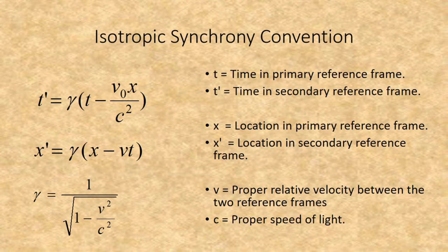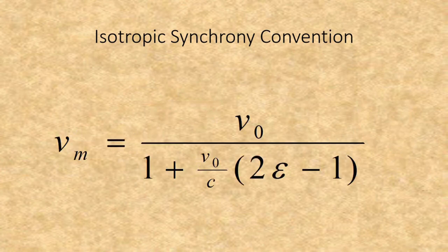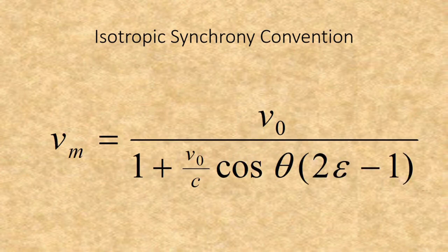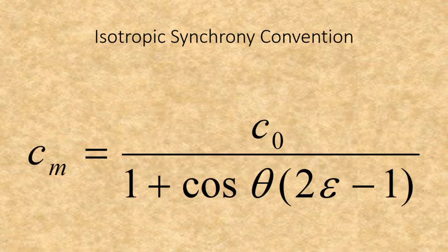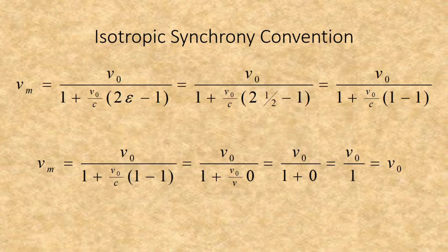The Isotropic Synchrony Convention does result in unaltered Lorentz transformations, which is one reason it is so commonly used, and it produces no alterations to the formulas of special relativity — the main reason it is also referred to as the Einstein Synchrony Convention. The issue with it comes from the formulas for what we actually observe from relative motion. With epsilon equal to 1/2 in these formulas, the measured radial velocity will always equal the proper velocity. This is, however, not what is actually observed.